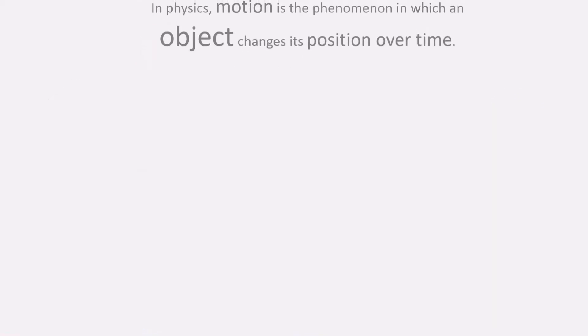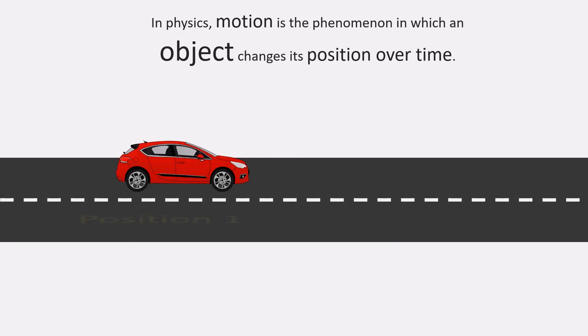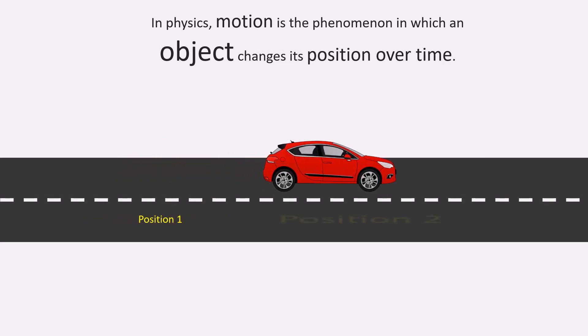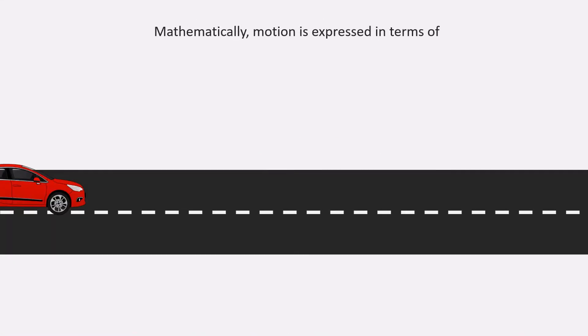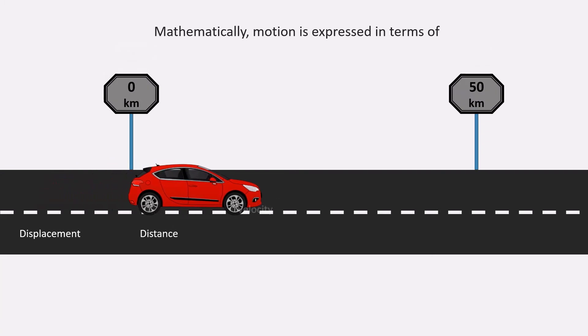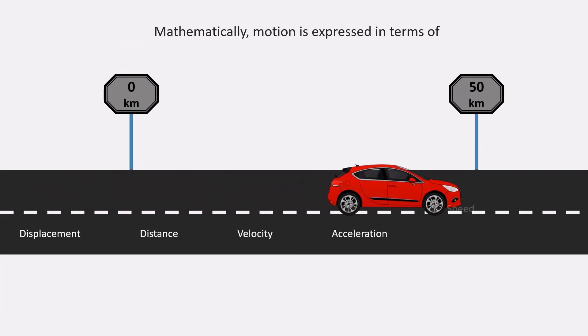As mentioned earlier, in physics, motion is the phenomenon in which an object changes its position over time. Mathematically, motion is expressed in terms of displacement, distance, velocity, acceleration, speed and time.